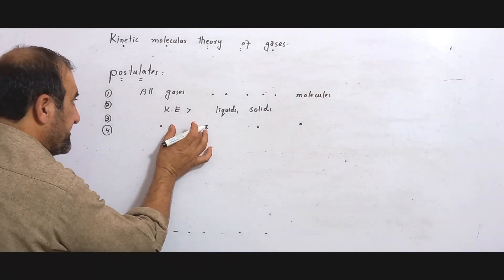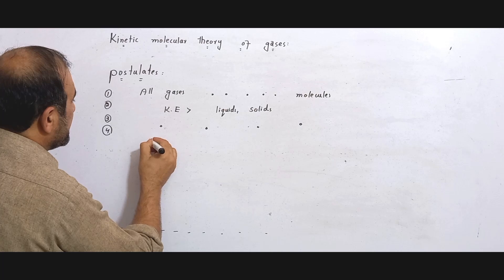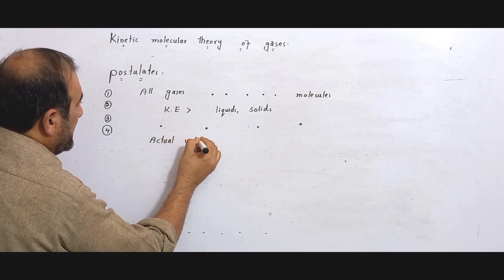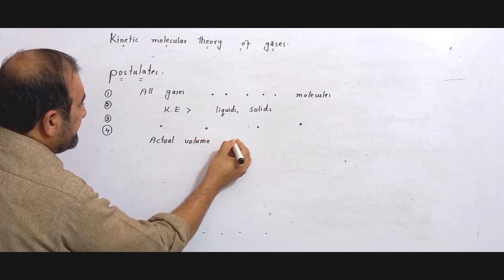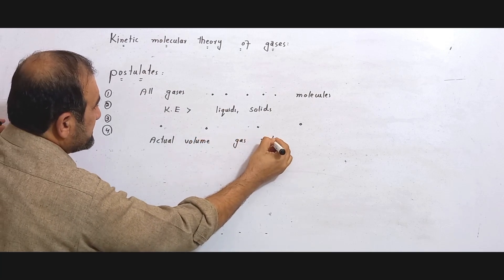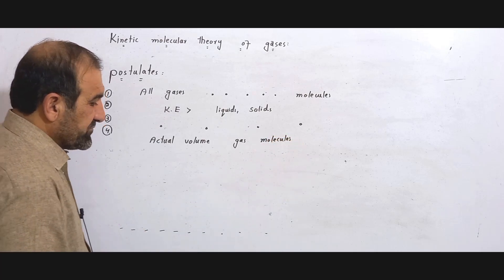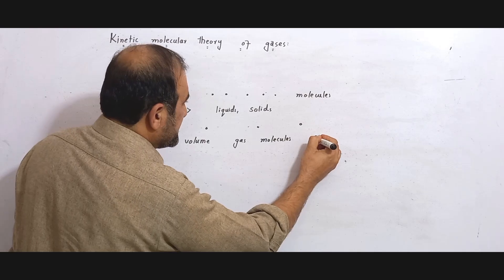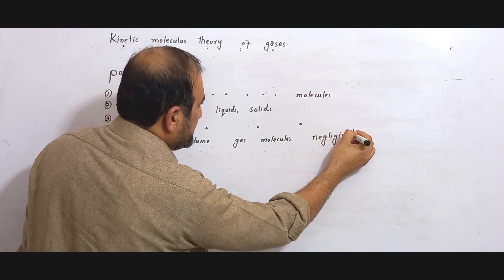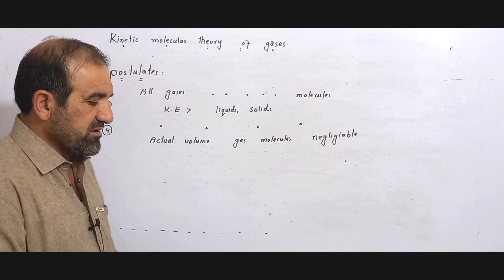Number four: the actual volume of gas molecules is negligible as compared to the total volume of the gas. The gas molecules have very small actual volume, and that volume is negligible compared to the total volume occupied by the gas.